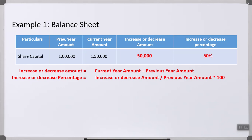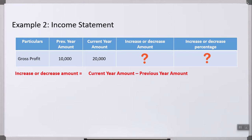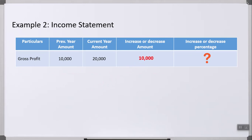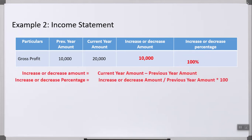Example 2 is from the income statement — let's take gross profit as the item. Previous year's gross profit was 10,000 and current year it has become 20,000. Using the same formula, increase or decrease amount = current year minus previous year = 20,000 minus 10,000 = 10,000. For percentage: 10,000 divided by 10,000 into 100 = 100%. So the gross profit has increased by 10,000, that is 100%. I hope you are clear with how to calculate comparative analysis.